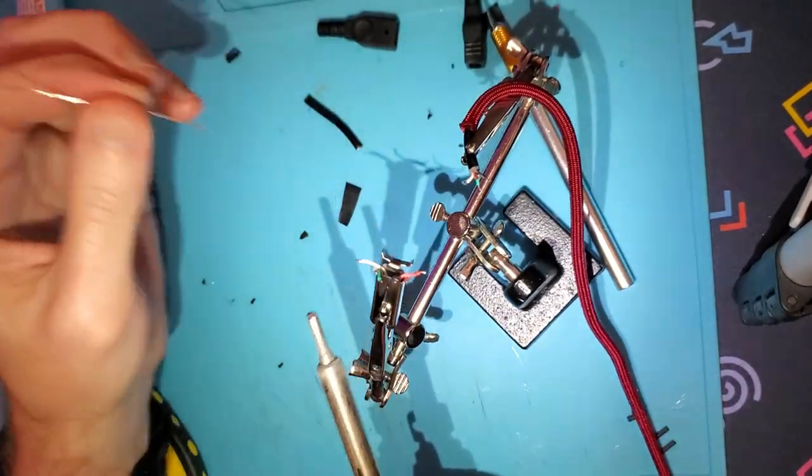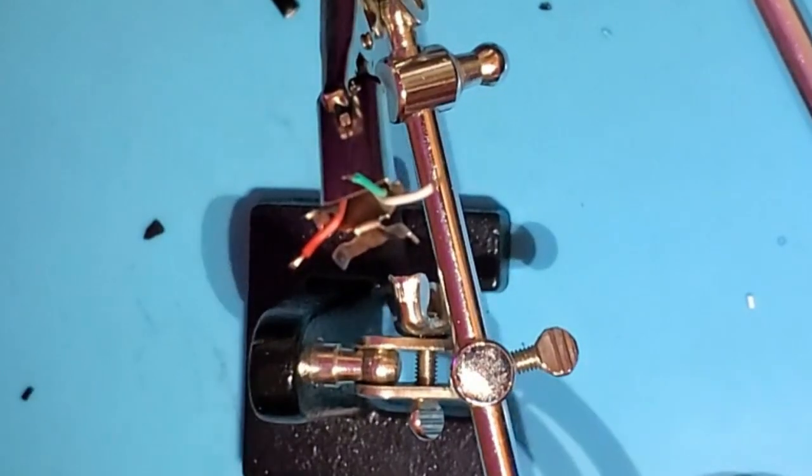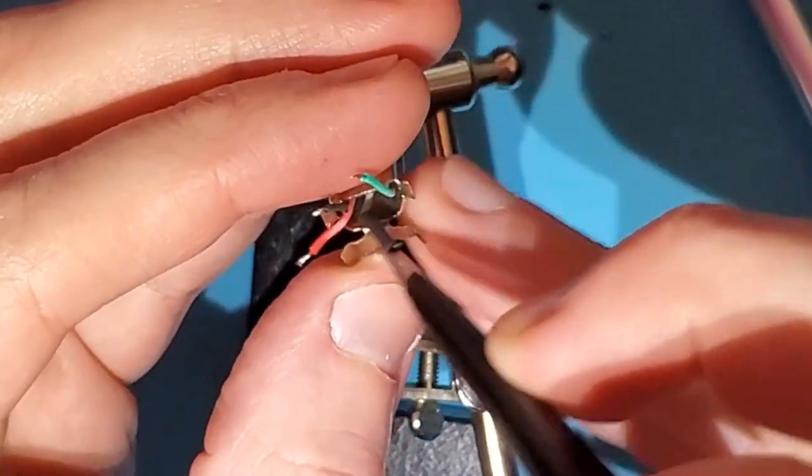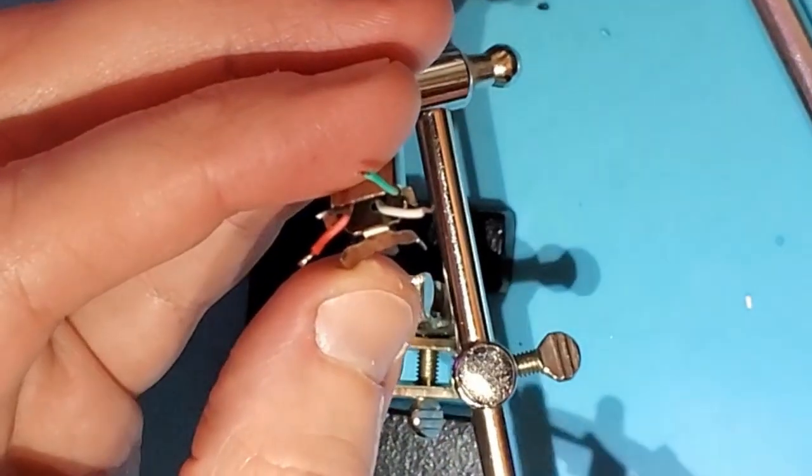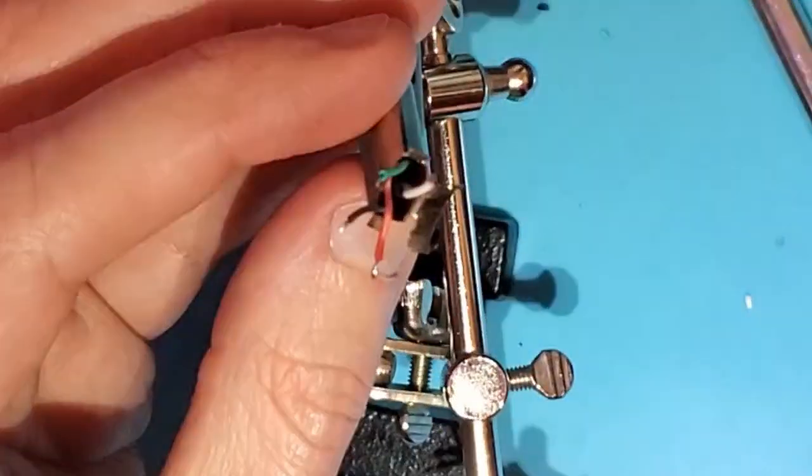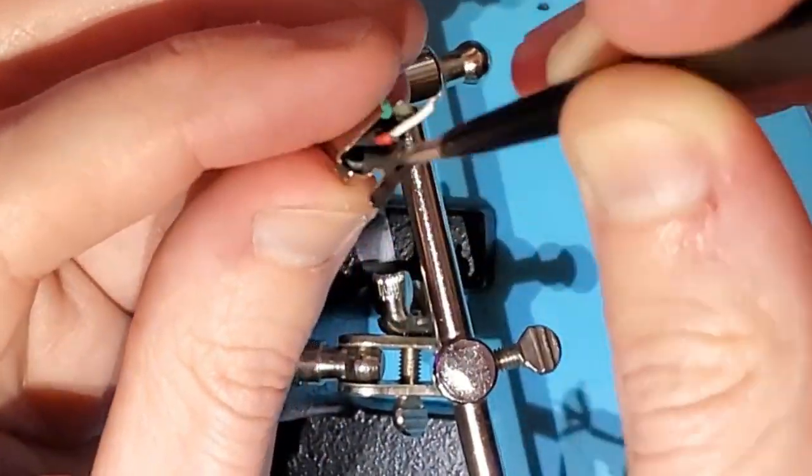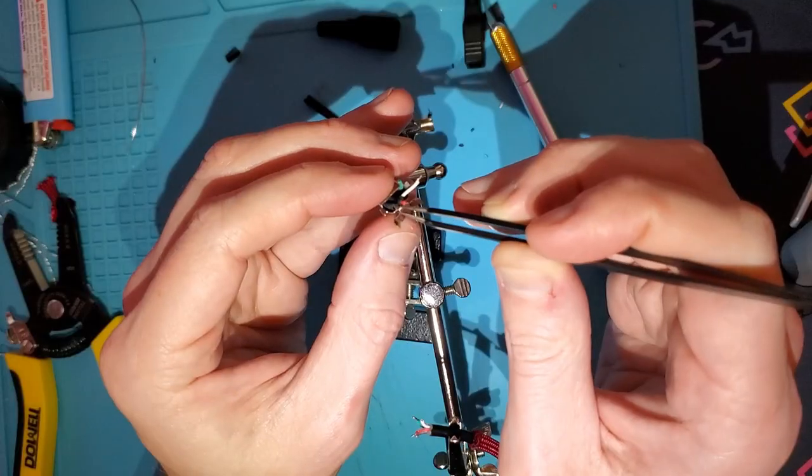Then we'll get those four little heat shrink tubings that we had and sleeve them over. Don't forget to do this before you solder the wires together. You want to put the little heat shrink tubing on the wires. What I do is I put them on the connector side and just kind of feed them into the connector for now, so they're out of the way.